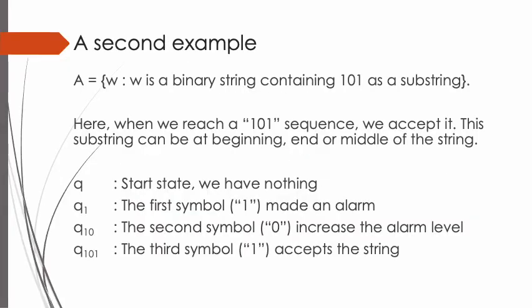A second example. A equals the set of W such that W is a binary string containing 1, 0, 1 as a substring. Here, when we reach a 1, 0, 1 sequence we accept it. This substring can be at the beginning, end, or middle of the string. Since there is no memory in automata, we must design states that enable the system to remember these three consecutive symbols. Q is the start state meaning we have nothing; Q1 means the first symbol — letter 1 — came and made an alarm.